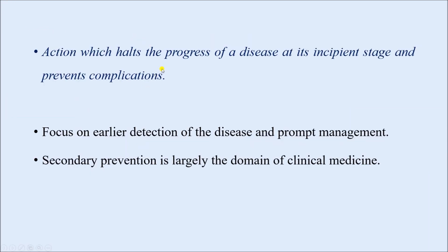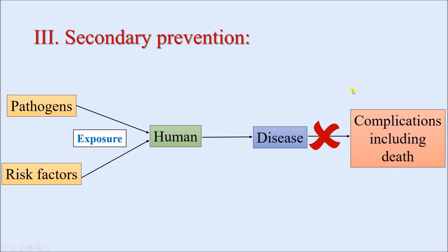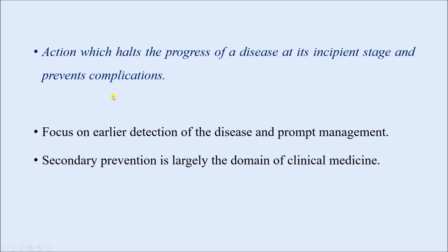By definition, secondary prevention is action which halts the progress of a disease at its incipient stage and prevents complications. The disease has already started, and when it is trying to progress further, we are trying to do something at the very early stage so that complications do not occur. What we have to do is focus on earlier detection of the disease and prompt management. The earlier a disease can be diagnosed and treatment started, the better the prognosis and the less the chance of complications. Secondary prevention is largely in the domain of clinical medicine, involving diagnostic procedures and clinical management.